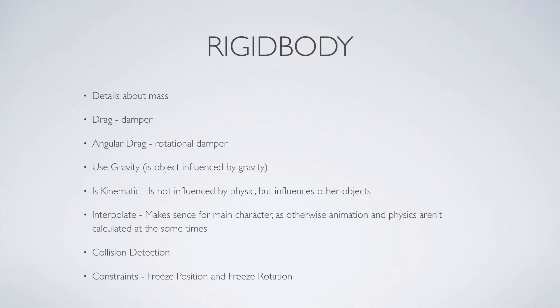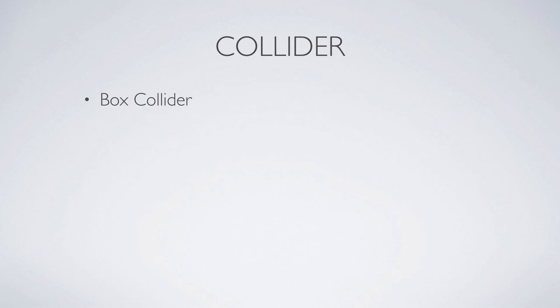So for example, if you want that our player or an object does not rotate, we can assign that it does not rotate to a specific angle, or it doesn't rotate at all — so it could freeze all of the rotations. Then there are colliders, and there are multiple colliders.